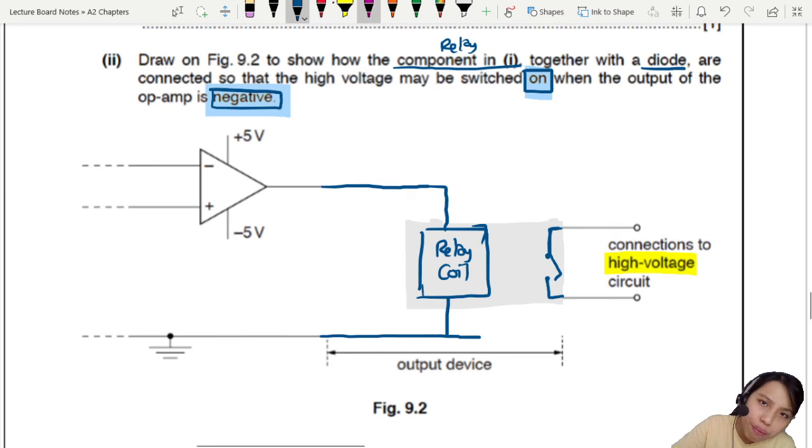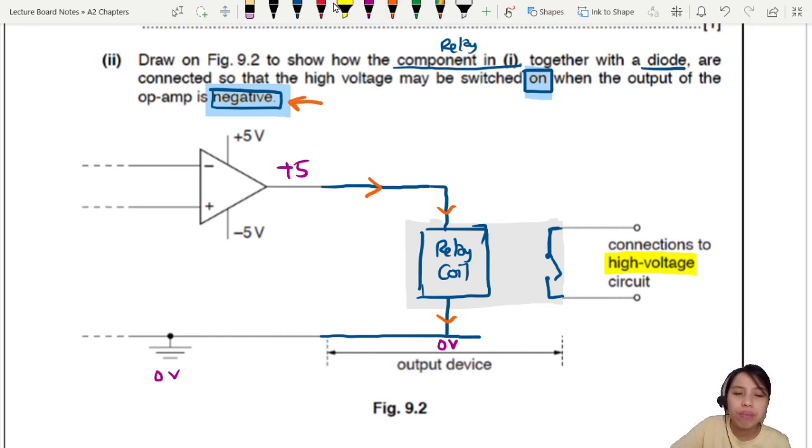So now if we leave it like this, just as it is, we have one problem. You see, if the output is plus five. Positive. Ground is bottom level, right? Zero. So means down here is zero volts. Where will current flow? Will current flow? Yes. From high potential all the way down to low potential. Then the relay will activate. But we only want it to activate when it's negative. So something is wrong here.